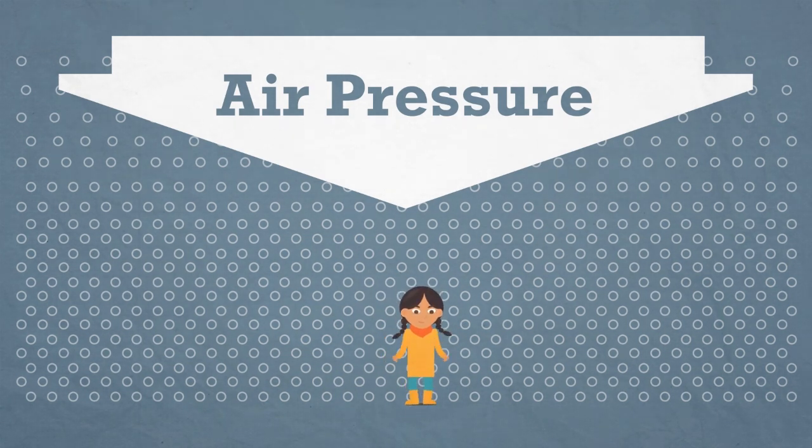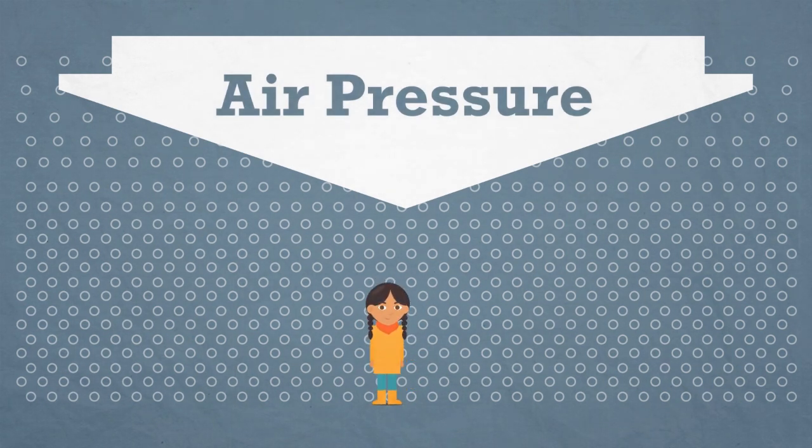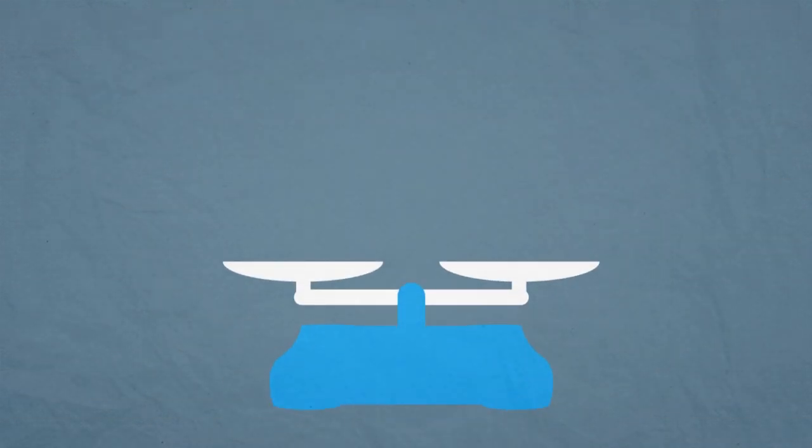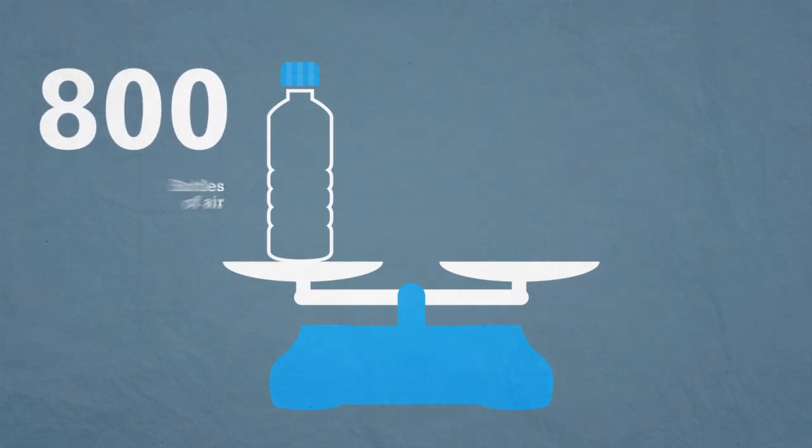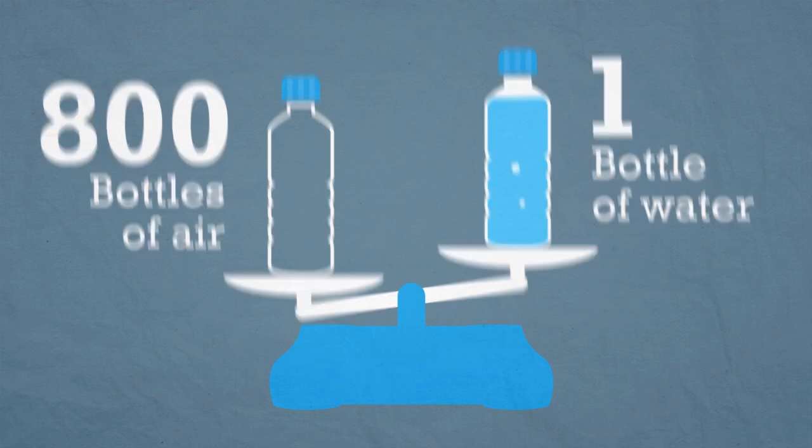We cannot feel air pressure because our bodies are naturally able to cope with the weight of the air above us. In fact, air is so light that it takes about 800 bottles of air to weigh as much as just one bottle of water.